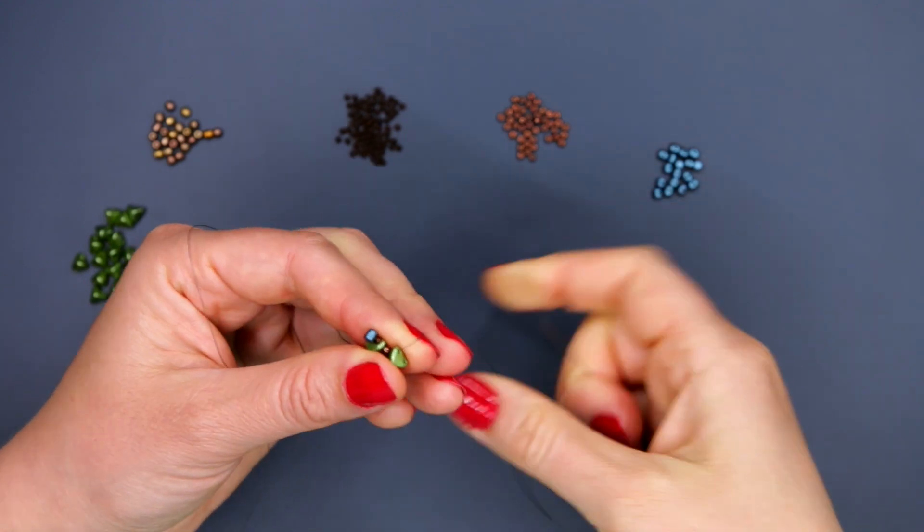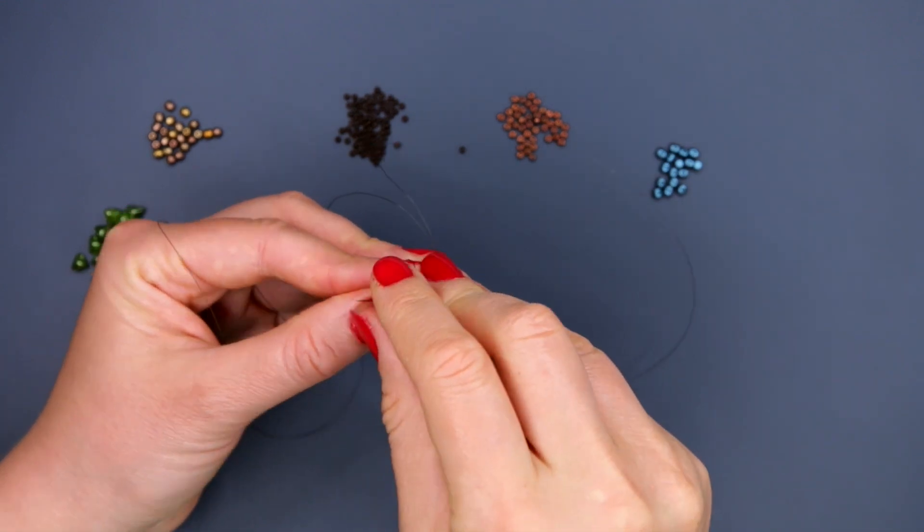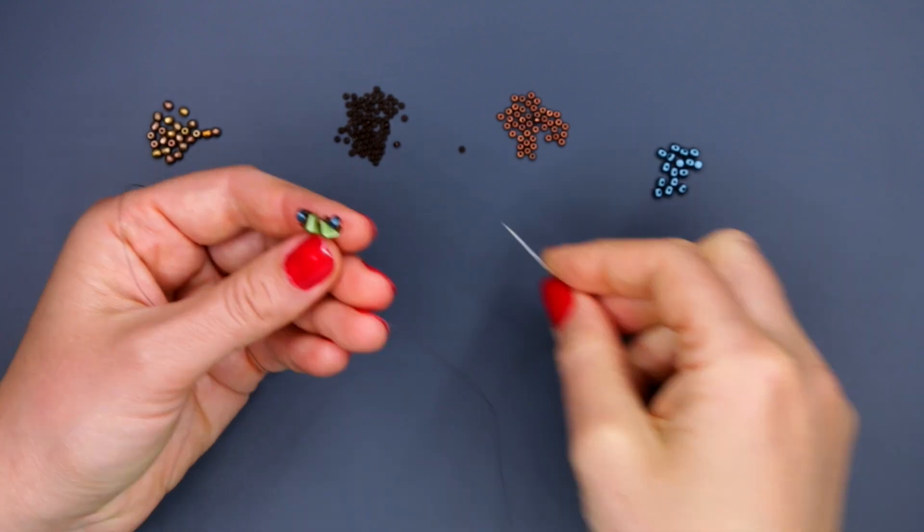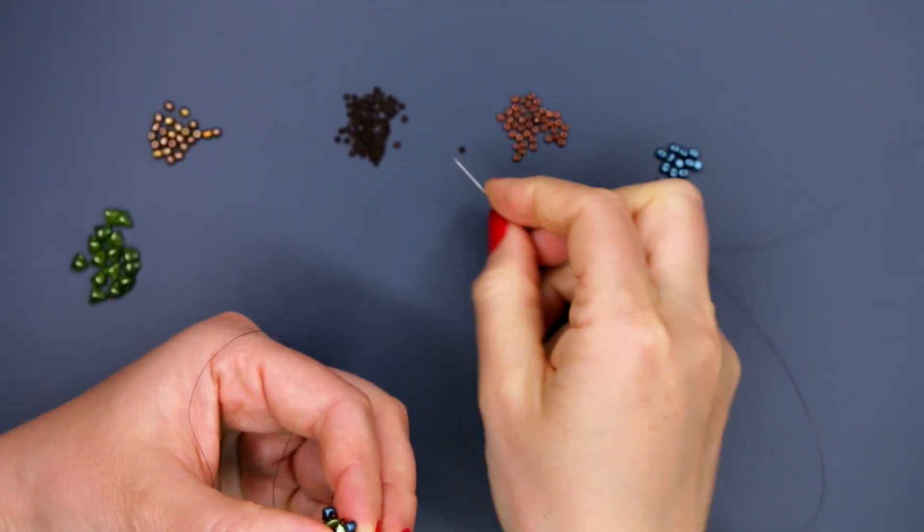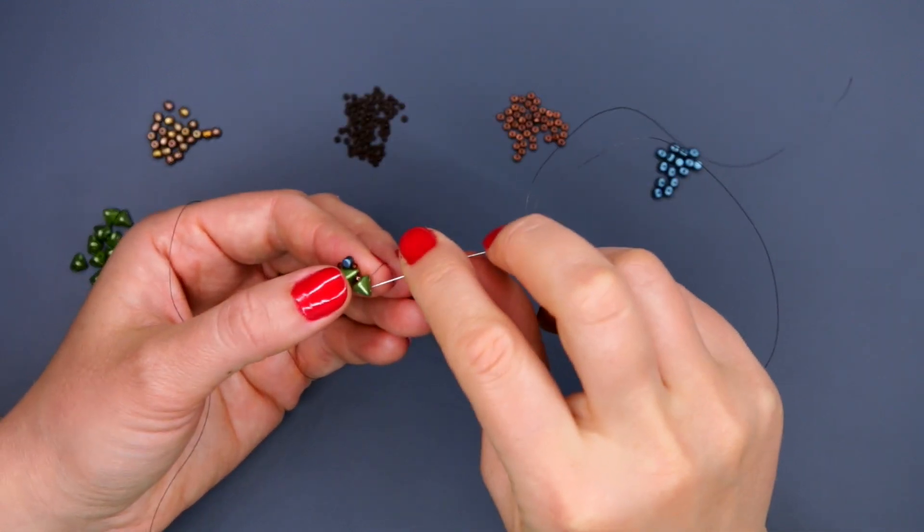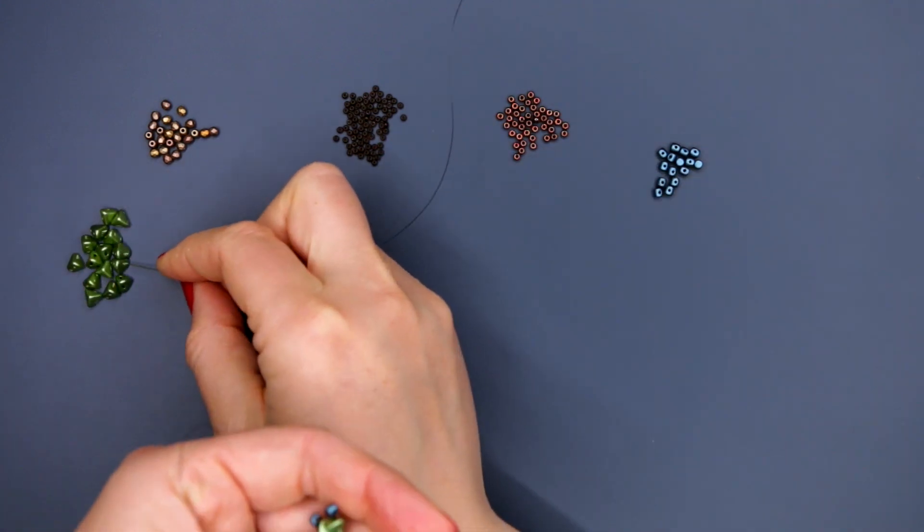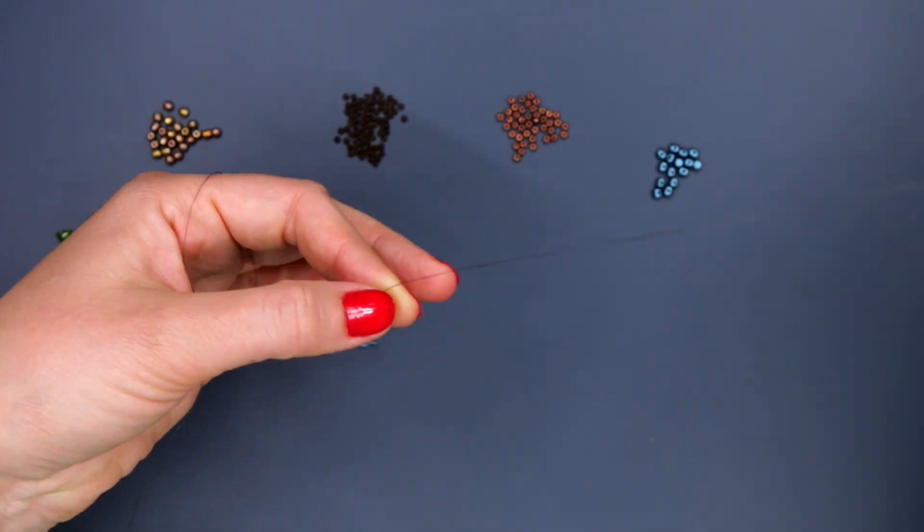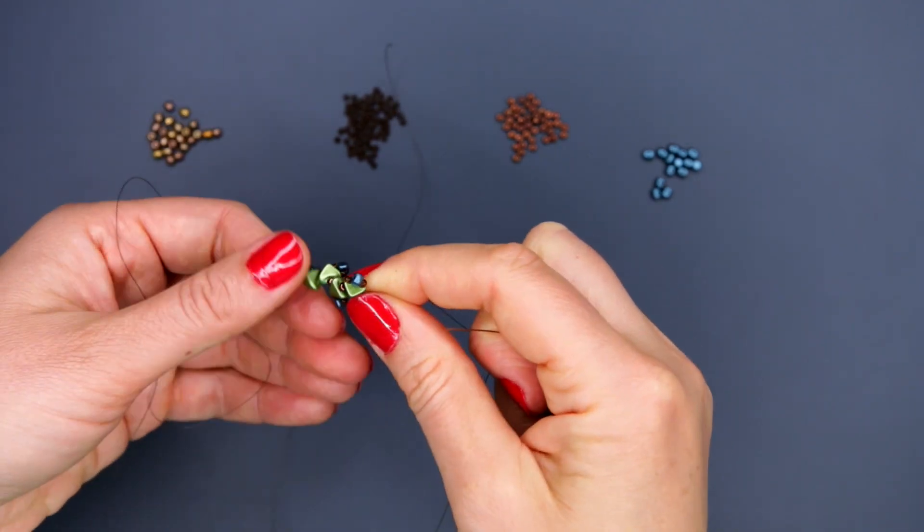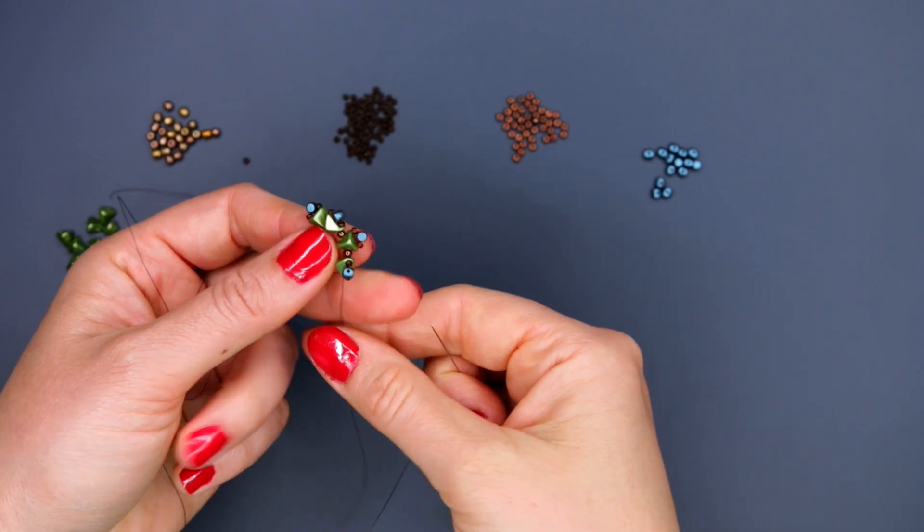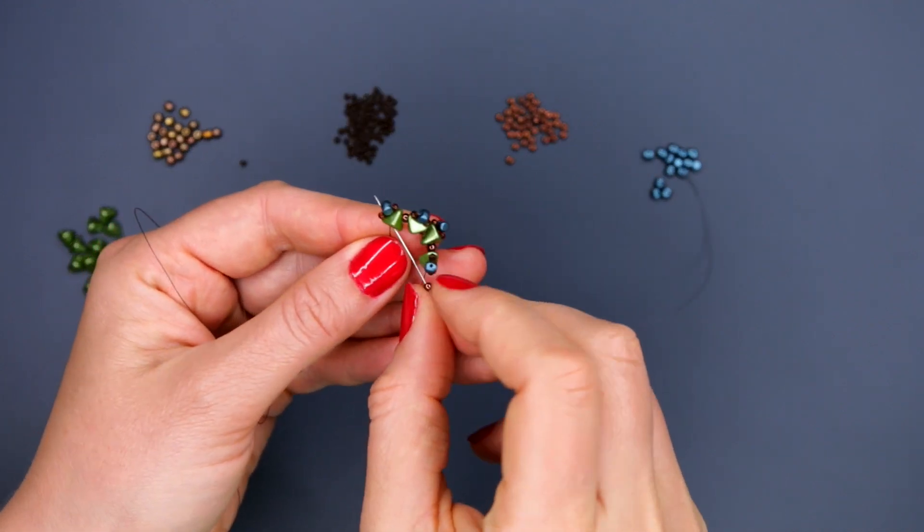And again, the same combination: seed bead size 11, minus, seed bead size 11, and return to the second hole. In the same way we string for the element 4 triangles. After we string the last seed bead size 10, go once more through the left hole of the first triangle in order to close the element.